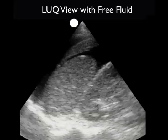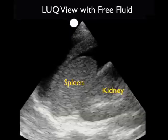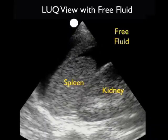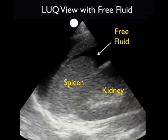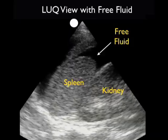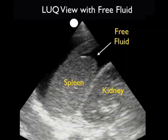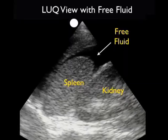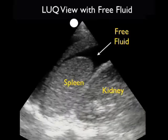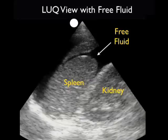Now let's take a look at a positive exam from a trauma patient. We see the spleen in the middle of the image, the kidney inferiorly located to the spleen, and notice the large amount of fresh fluid — that dark or anechoic fluid collection — layering out above the spleen in the infradiaphragmatic location and anterior to the spleen. This indicates a large amount of fresh blood in the left upper quadrant. We also see a blood clot — that echogenic material — waving around anteriorly to the spleen. So a positive exam in a trauma patient.